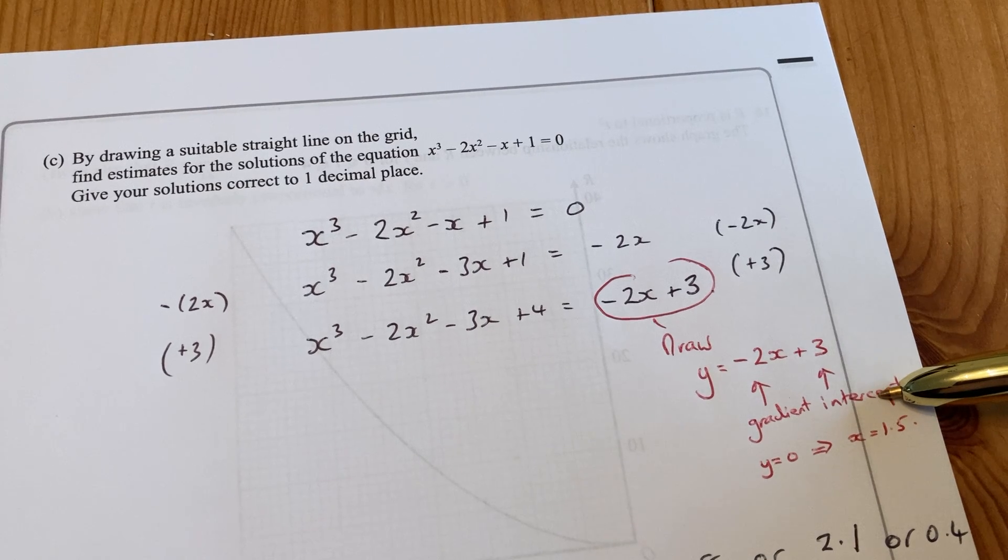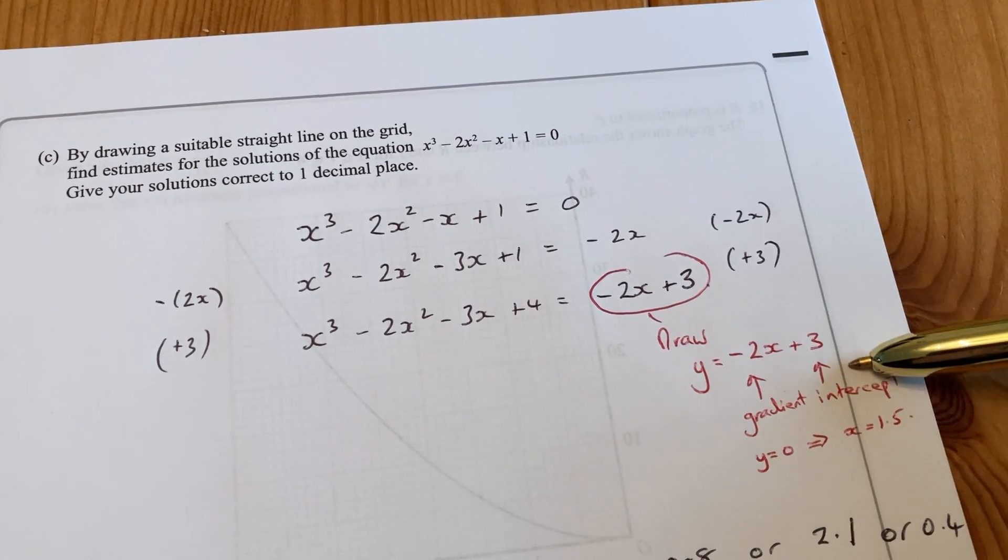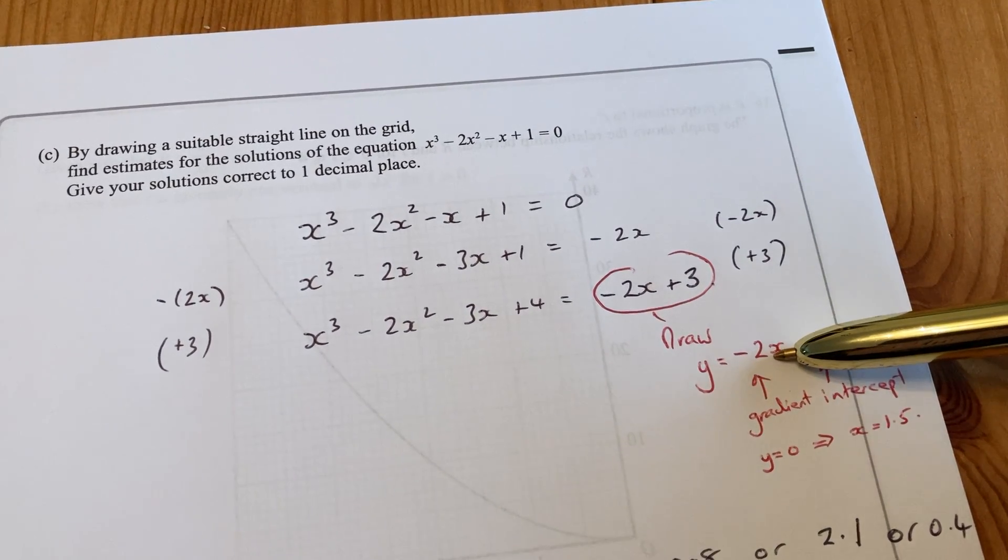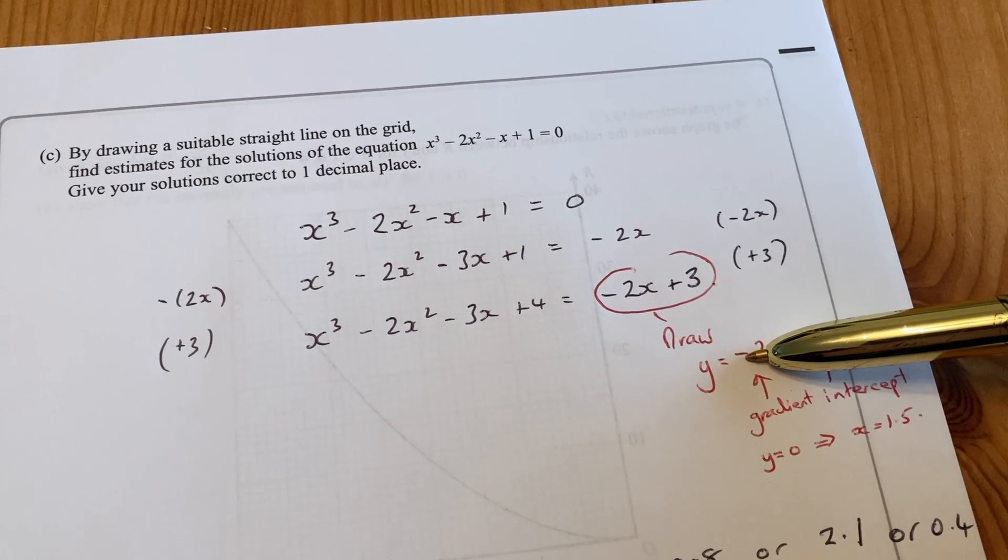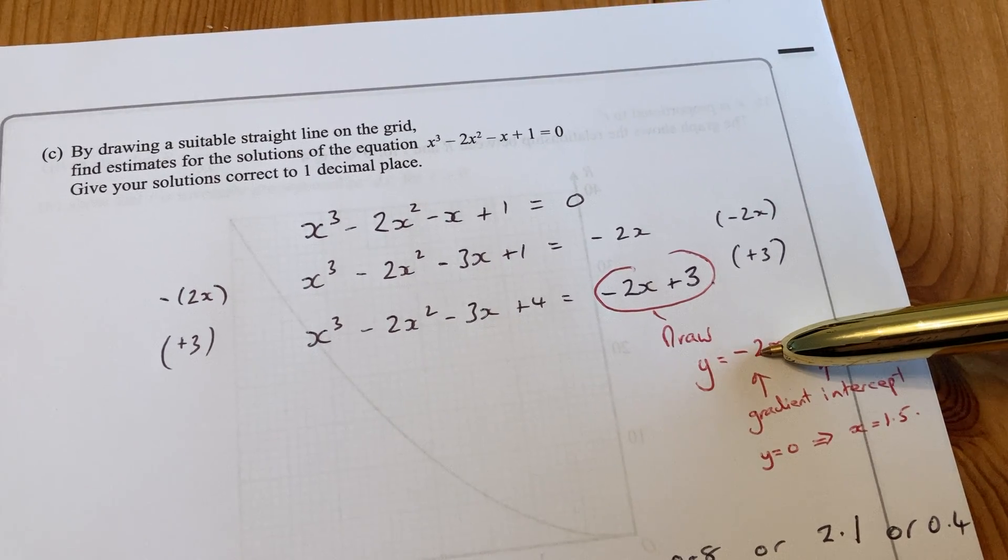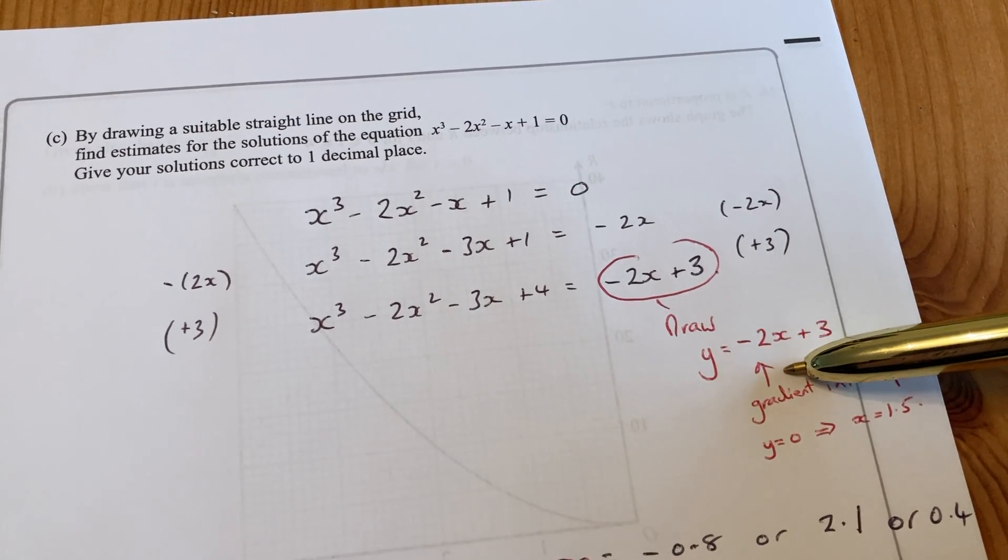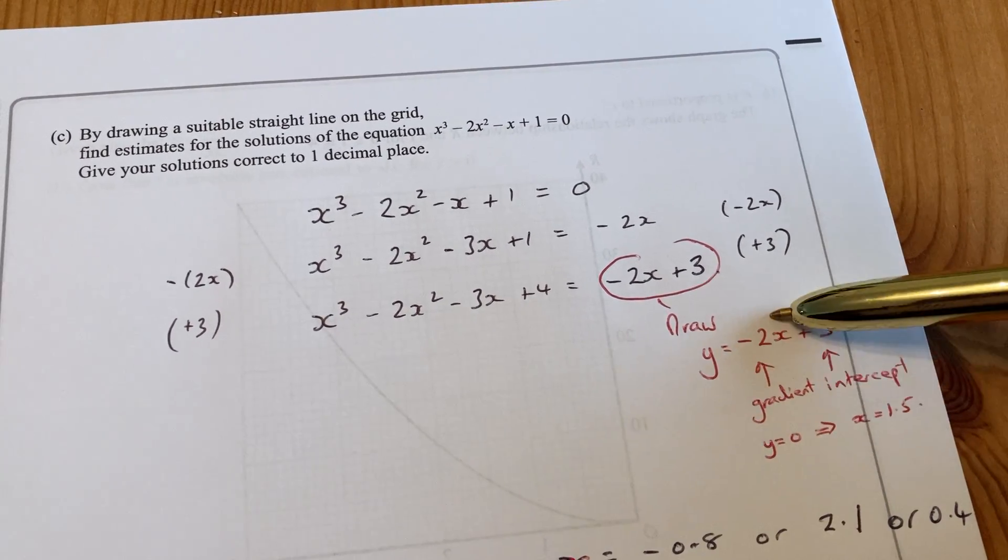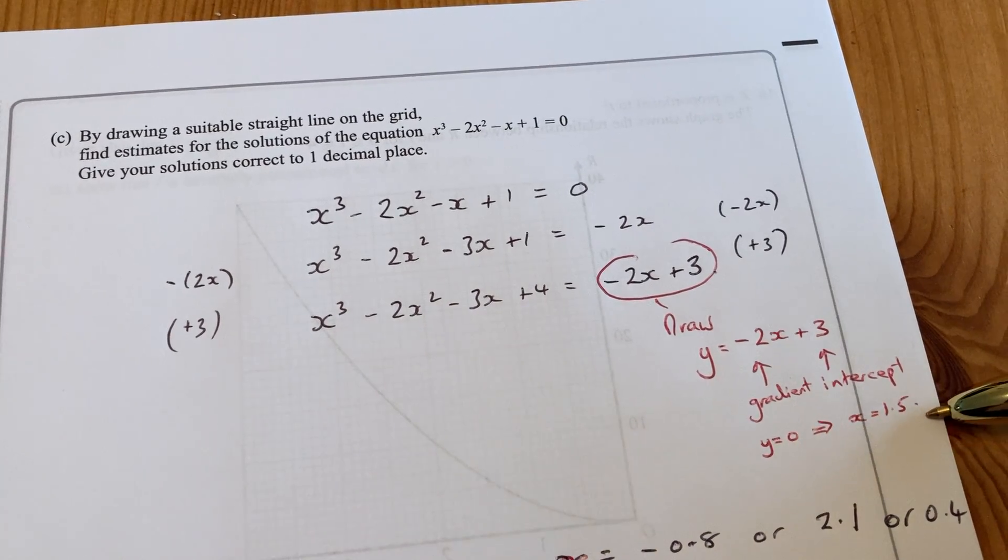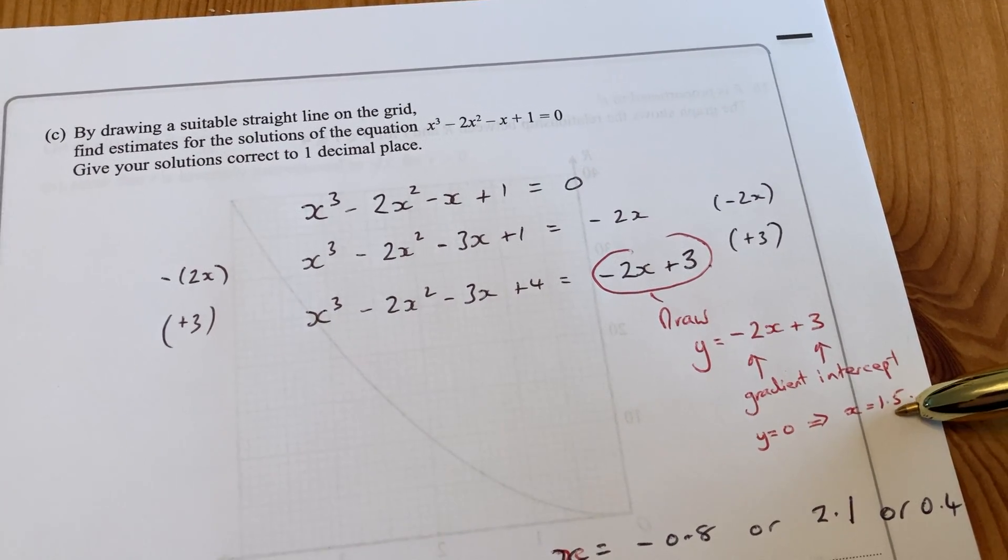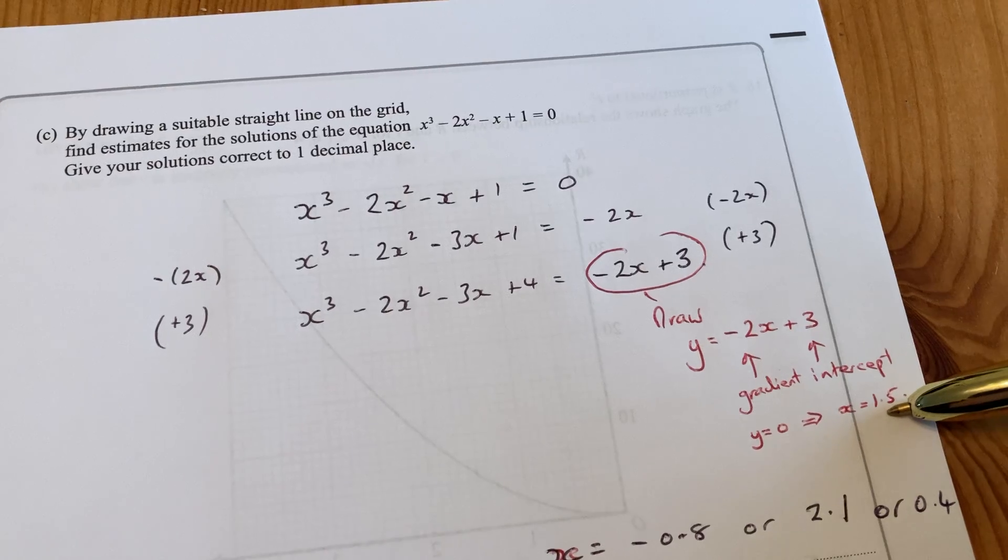Remember, 3 is the y-intercept, so it goes through the y-axis at 3. -2 is the gradient, so it's a downhill straight line: 1 across, 2 down. Alternatively, you can set y = 0 and find where it crosses the x-axis at 1.5.